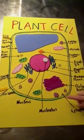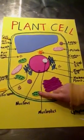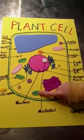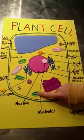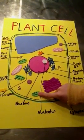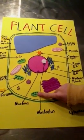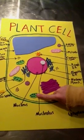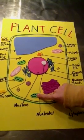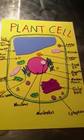The chloroplasts contains this plant's green color and it has the ability to absorb the energy from the sun.